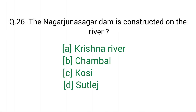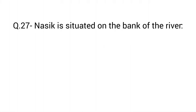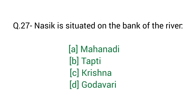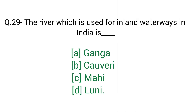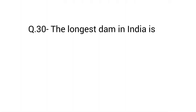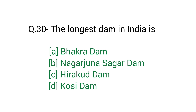Question number 26: The Nagarjuna Sagar Dam is constructed on the river — right answer option A: Krishna river. Question number 27: Nasik is situated on the bank of the river — right answer option D: Godavari river. Question number 28: Srinagar is located on the bank of the river — right answer option B: Jhelum river. Question number 29: The river which is used for inland waterways in India is — right answer option A: Ganga. Question number 30: The longest dam in India is — right answer option C: Hirakud Dam, Orissa.